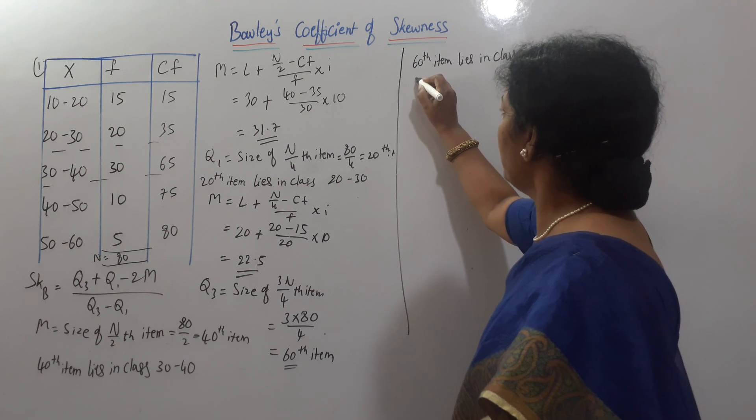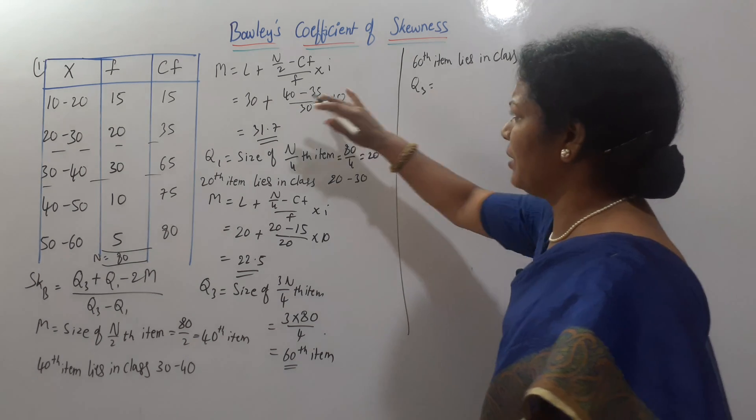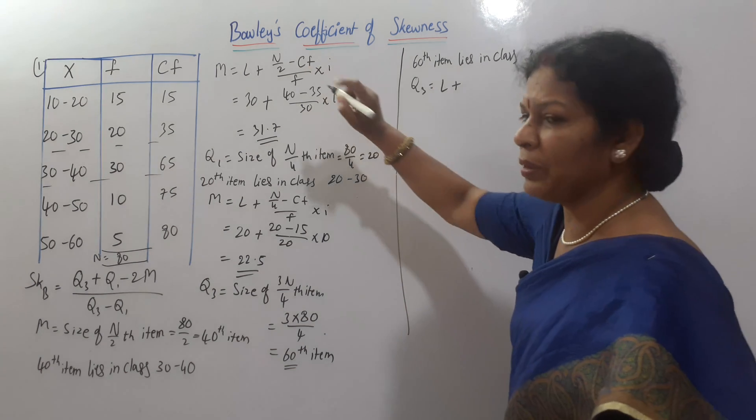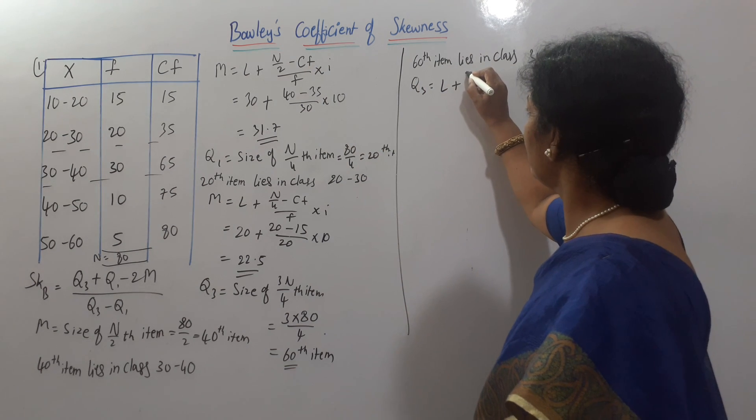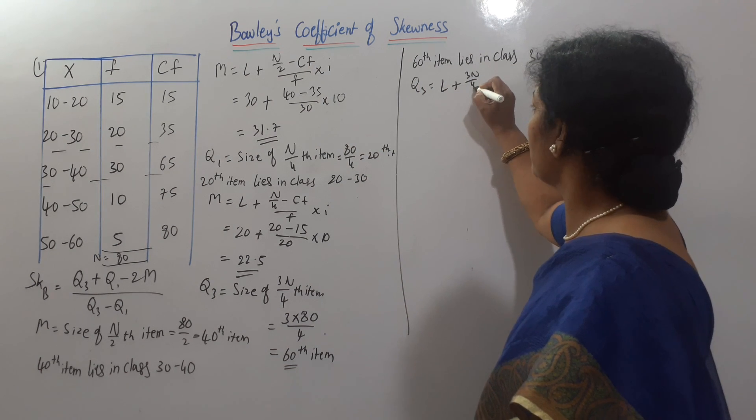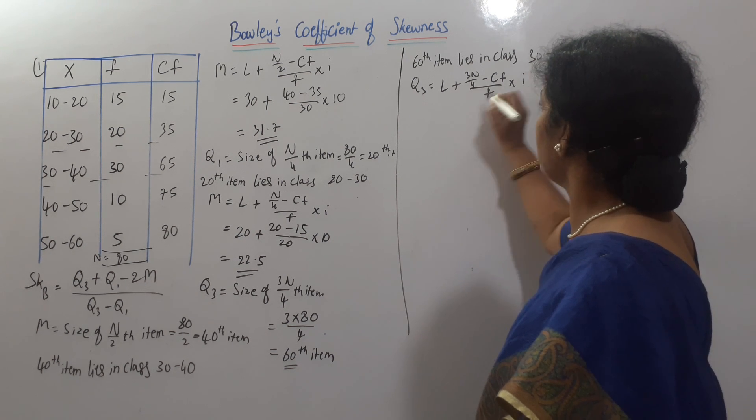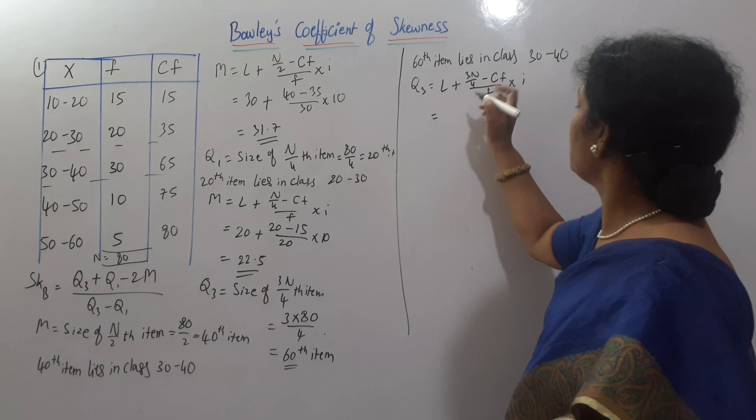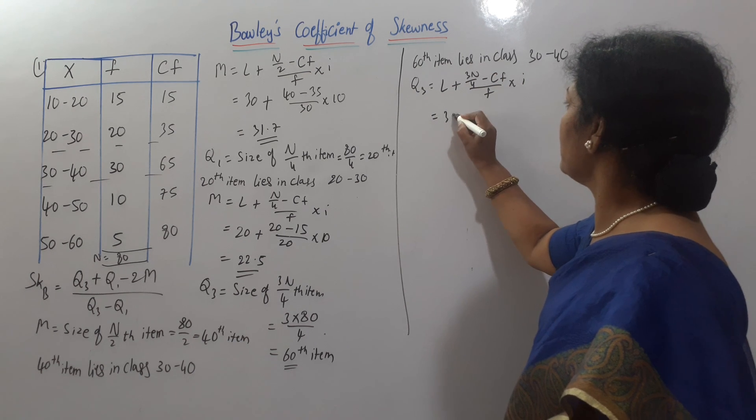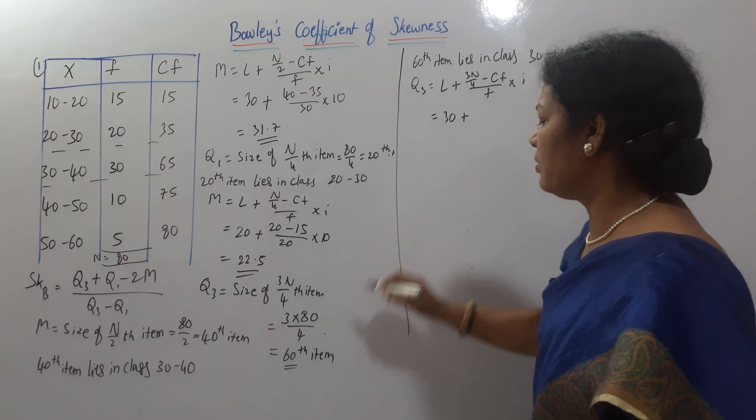Now, Q3 formula, you know, formula is same one. L plus, instead of N by 2, we will write 3N by 4. Minus CF by frequency into I. So, L is here 30 to 40, no? So, L is 30. 3N by 4 is 60. 60 minus CF is 35.